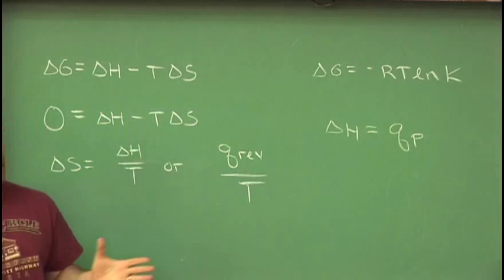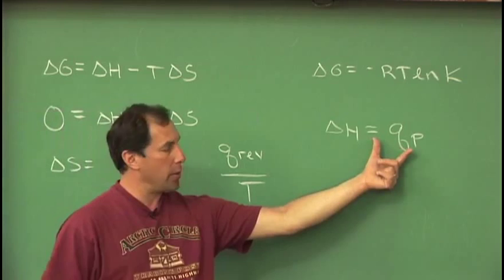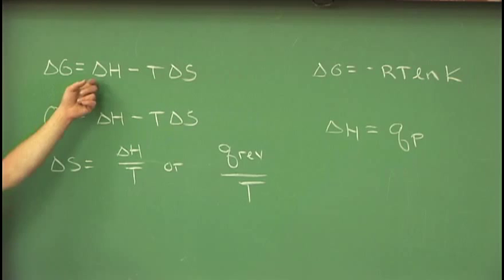So if we want to know something like maybe the enthalpy of a Cheeto, we take a Cheeto, we give it a spark to get it started, we burn it, and we measure the heat that it gives off, we call that delta H. So these two are very simply determined by experimental data.